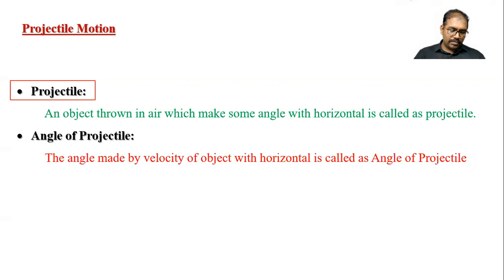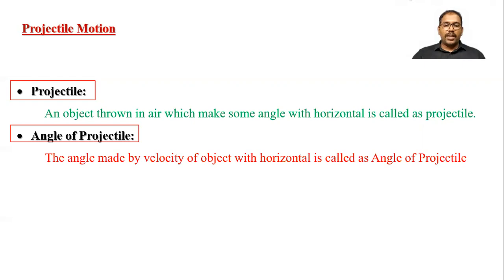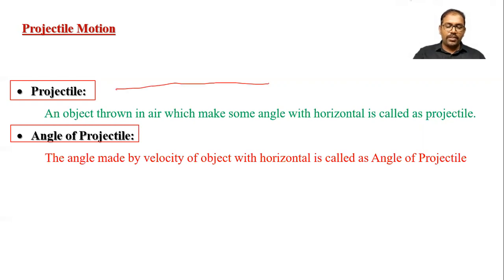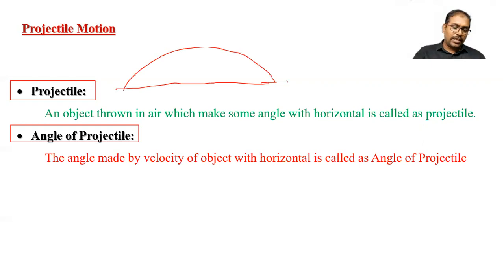Next is the angle of projectile. The angle made by the velocity of the object with the horizontal is called the angle of projectile. For example, if we throw an object, this is the horizontal, and the initial velocity u makes some angle with the horizontal. This angle theta is called the angle of projectile.